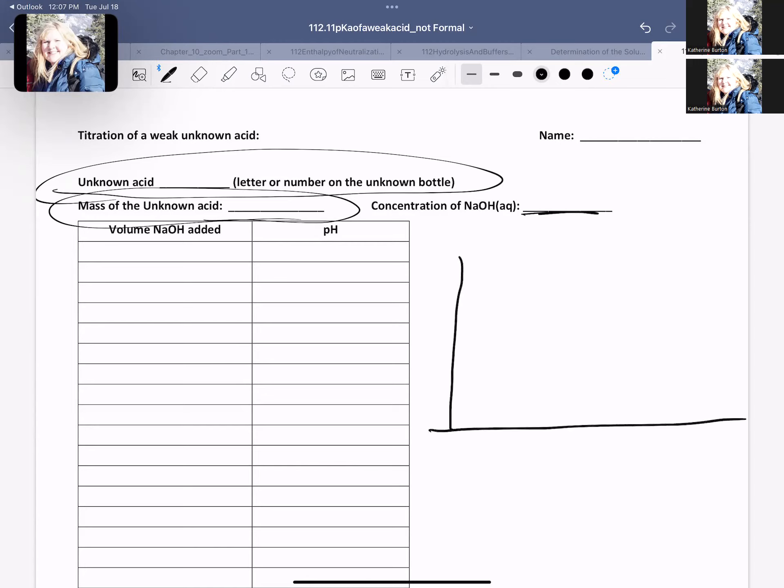When you graph this, you're going to have some rules here. Make sure you have the maximum amount of grid lines because you're going to have to read off of this graph. You're going to put the pH on the y-axis. You're going to put the volume of your NaOH added on your x-axis, and you're going to have your grid lines.